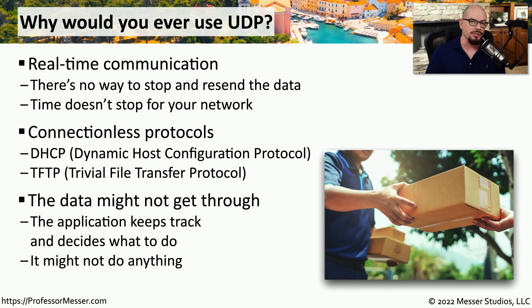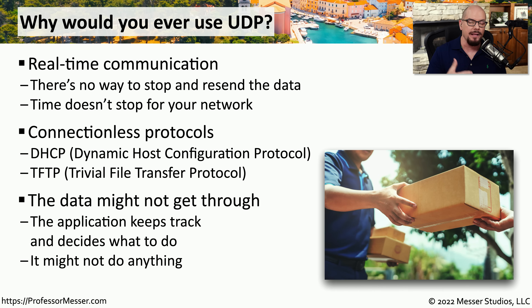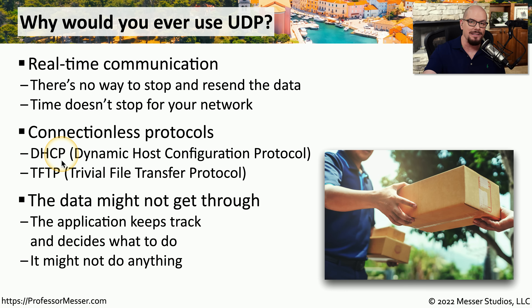Since both of these protocols are using UDP, information is simply sent across the network with no acknowledgment that the data was received on the other side. It's up to the application to keep track of who has received information and who has not. For example, DHCP is responsible for making sure information was received — so if it sends information and doesn't receive a response, DHCP is responsible for resending that data over the network.